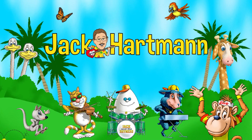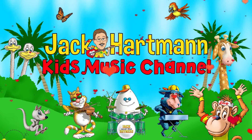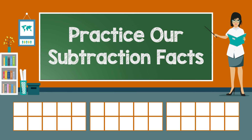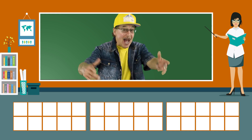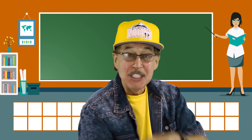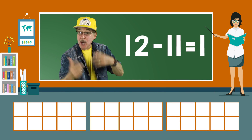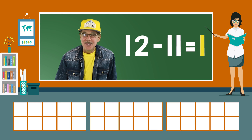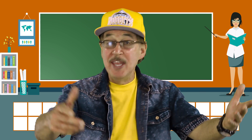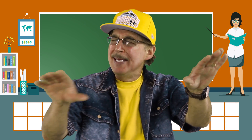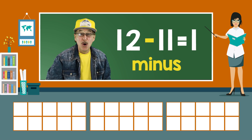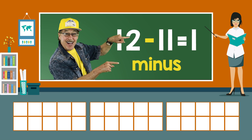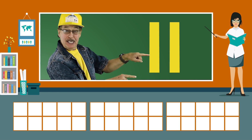Jack Cartman Kids Music Channel. Let's practice our subtraction facts — learn with me like this, and learn just like that. When you subtract you take away and always get less. When you subtract you get the difference. When there's subtraction any time, you always see the minus sign. Subtract 11 from each number.